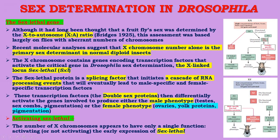Now, regarding the sex lethal gene: it had long been thought that fruit fly sex was determined by the X-to-autosome ratio according to Bridges in 1925. However, recent molecular analysis suggests that X chromosome number alone is the primary sex determinant in normal diploid insects. The X chromosome contains genes encoding transcription factors that activate the critical gene in Drosophila sex determination — the X-linked locus Sex lethal, abbreviated SXL.